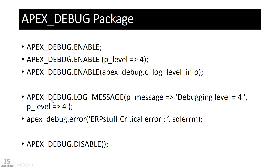To log a message, use apex_debug.log_message with a debug level equal to four. You pass a text string to display and specify the level. You can also mention level four directly while logging the message.